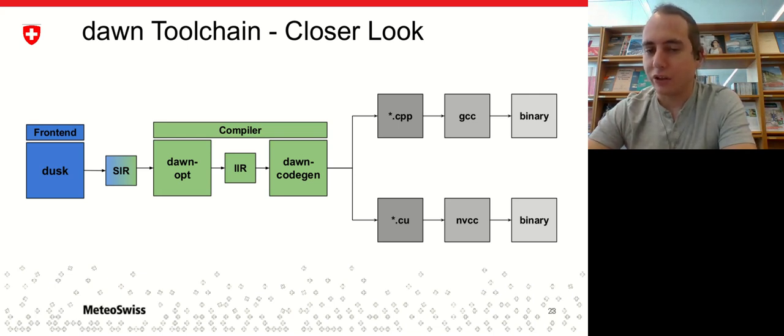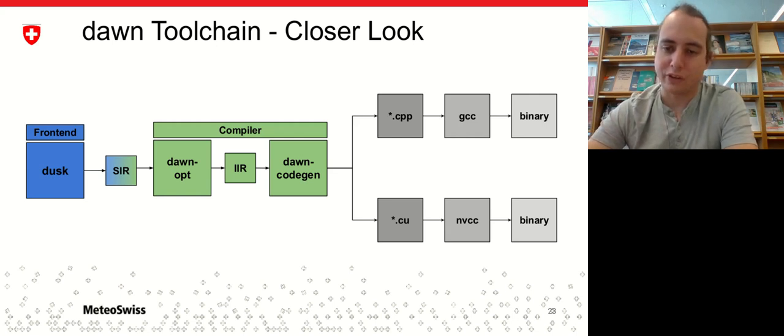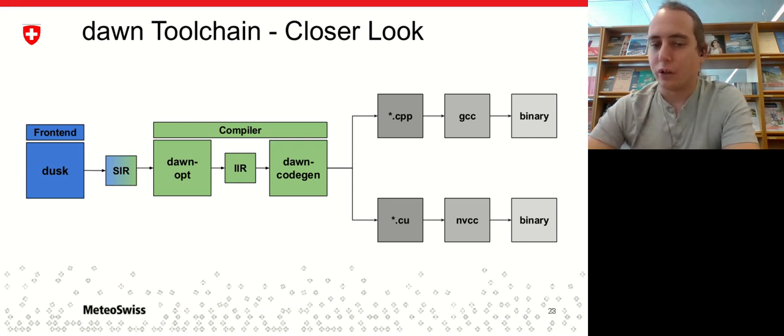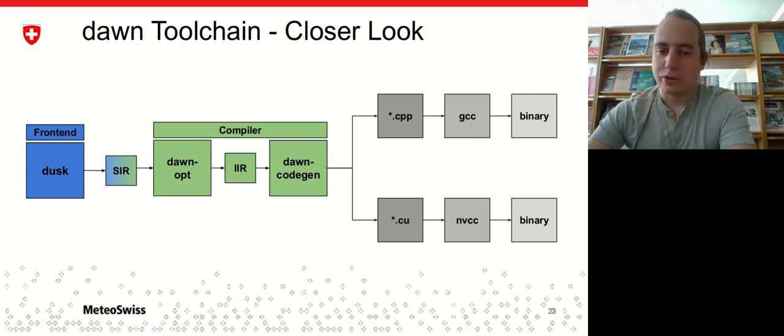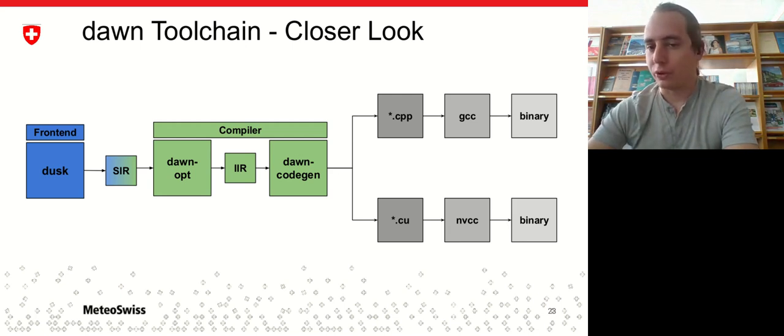Eventually, after no more optimizations are possible, the IAR is fed into the code gen stage, which basically just understands the IAR. And for each IAR element, emits a code primitive in the final host language. So if the user decides that they want CUDA code, it would emit CUDA code in CU files. Or if the user decides that they want C++, it's going to emit C++ code. And it's then up to the user to further process this code down to a binary using the appropriate host compilers on the computer or supercomputer.